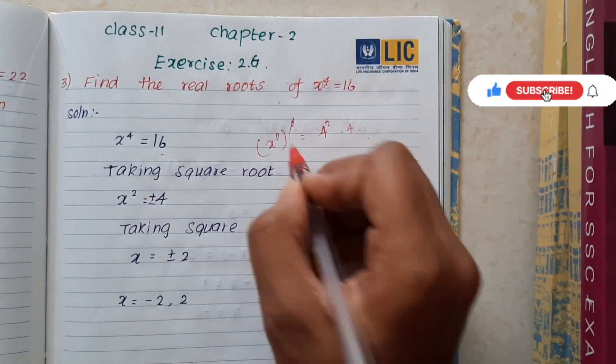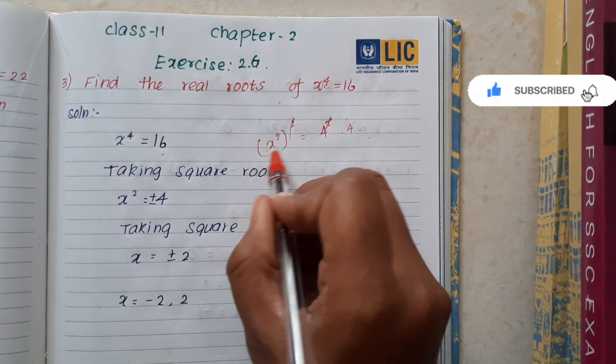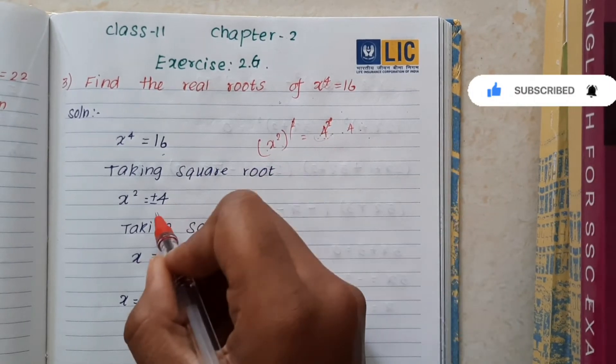Now, taking the square root, we get x² is equal to 4.